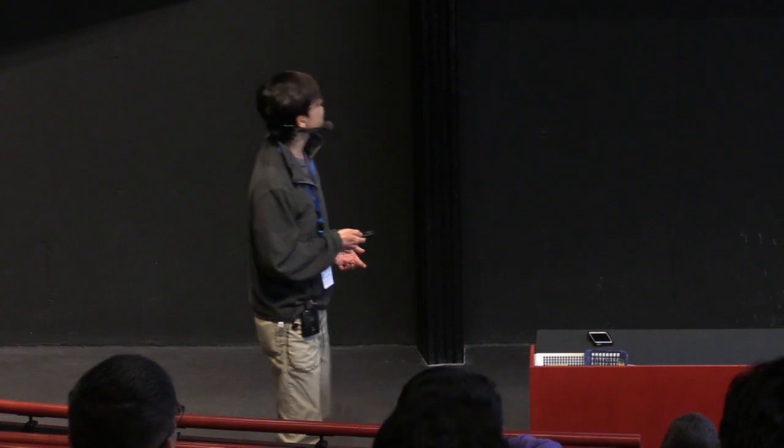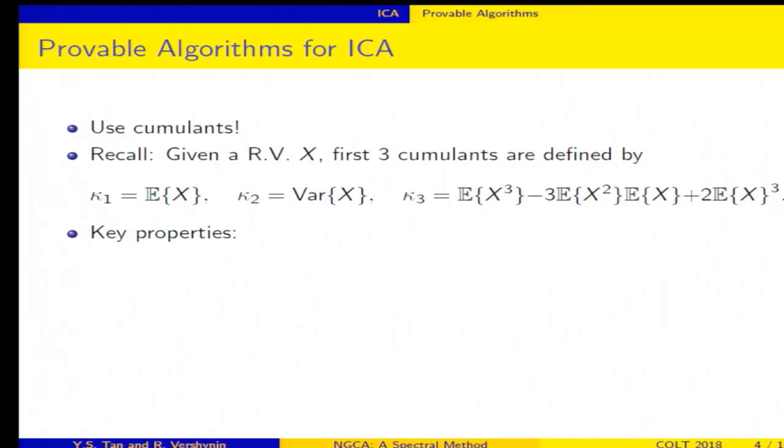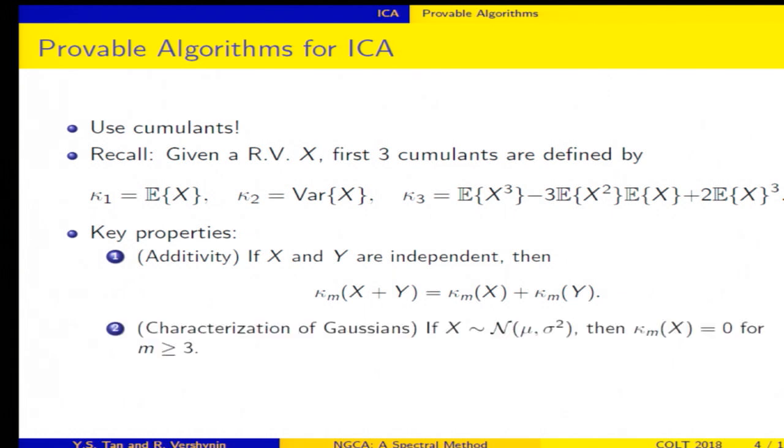Okay, so why are we interested in these objects? Well, because they have several nice properties. The first property is that they are additive over independent random variables. So if X and Y are independent, then for any M, the M cumulant of the sum is the sum of the M-th cumulants. So that's the first property. The second property is that cumulants characterize Gaussians. So if you have a Gaussian, so it doesn't matter what mean and what variance, then its M-th cumulants for any M bigger than or equal to 3, it's going to be equal to 0. So this characterizes Gaussians.